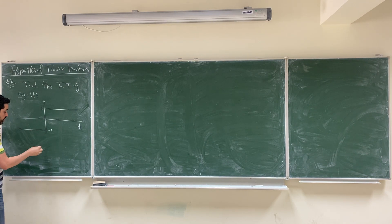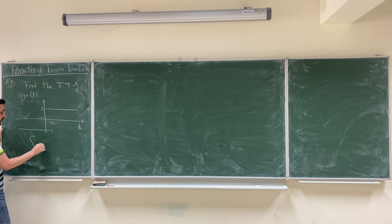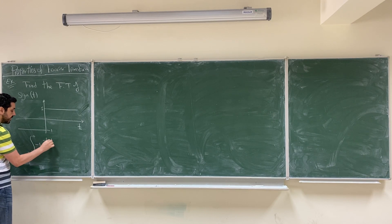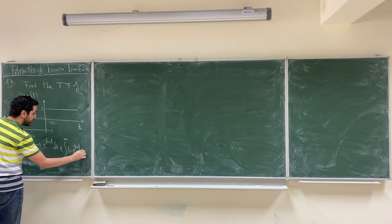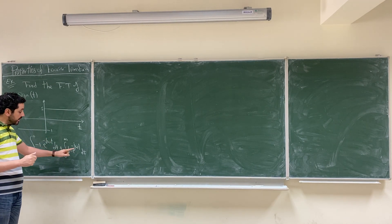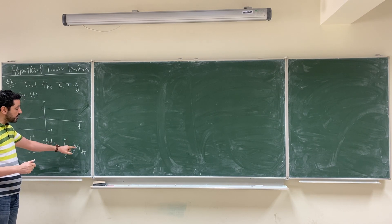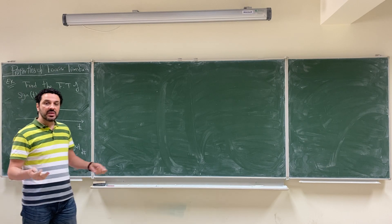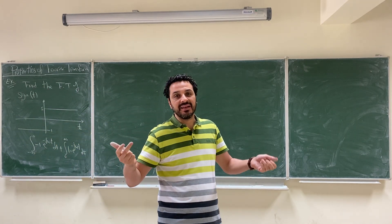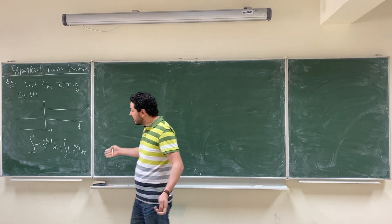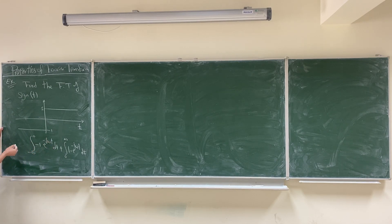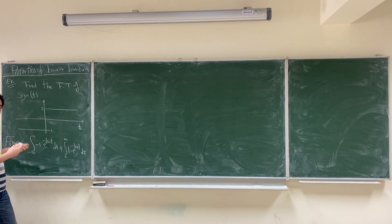If you want to calculate the Fourier transform of this signum function using the integration from minus infinity to infinity — for example, the integral from minus infinity to 0 of (−1)·e^(−jωt) dt, plus the integral from 0 to infinity of (1)·e^(−jωt) dt — you will find that calculating this integration is very difficult. Because we have a complex angle, and when you substitute the limit infinity into an angle, e^(j∞) will not give you any known answer. So it is very difficult to reach a closed-form expression, and we cannot use this integration to calculate the Fourier transform of the signum function. That is why we say this function is a special case.